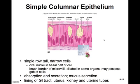Simple columnar epithelium has a single row of tall narrow cells with oval nuclei in the basal half of the cell. They often have a brush border or microvilli, are ciliated in some organs, and may possess goblet cells. They're involved in absorption, secretion, and mucus secretion. Simple columnar epithelium is found in the lining of the GI tract, uterus, kidney, and uterine tubes.